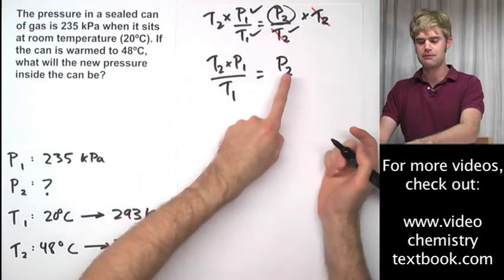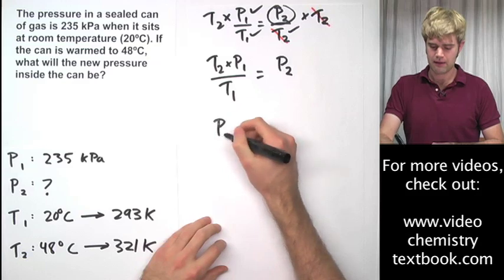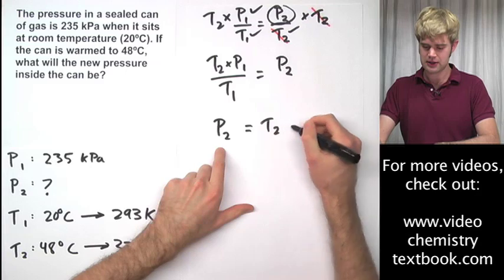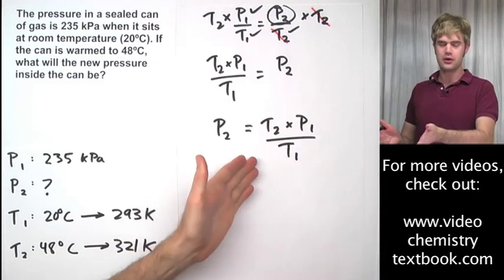Now I have T2 on the bottom here and on the top of this fraction so they both cancel out. And I can rewrite this as T2 times P1 divided by T1 equals P2. Now, some of you guys might not like that P2 is on the right-hand side so I'll just flip it. But really it's the same equation either way. So this way we'll just say P2 equals T2 times P1 divided by T1.